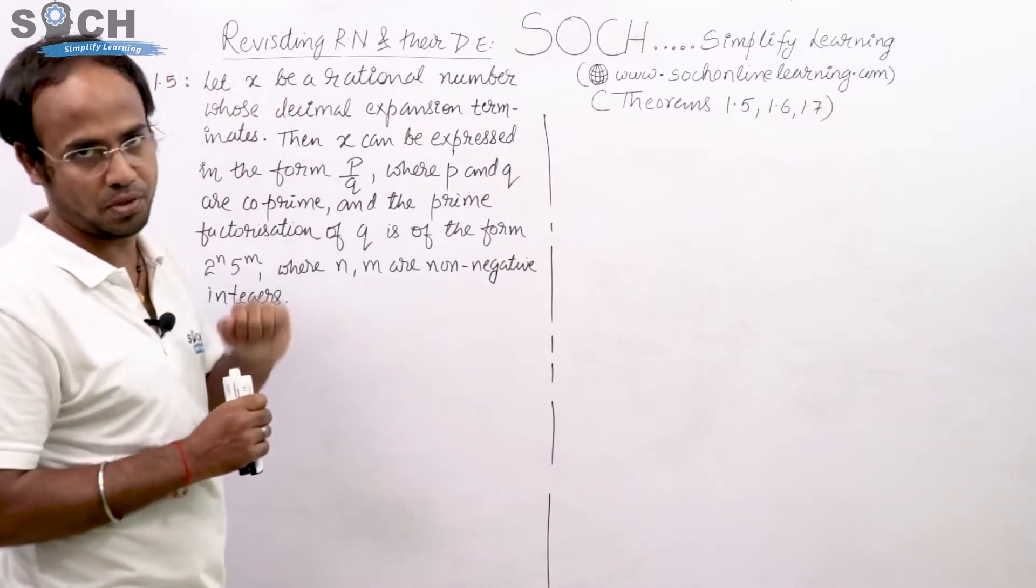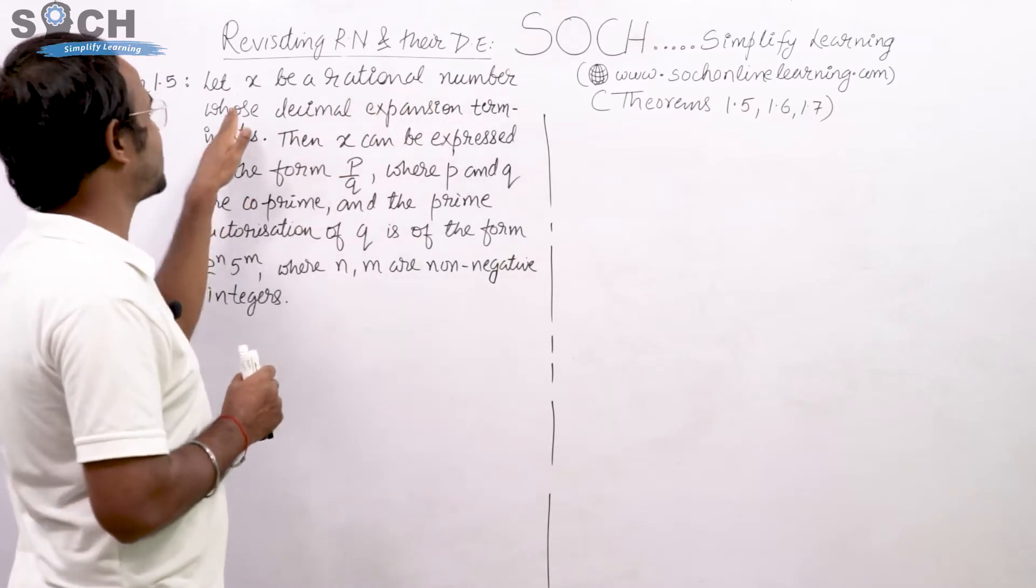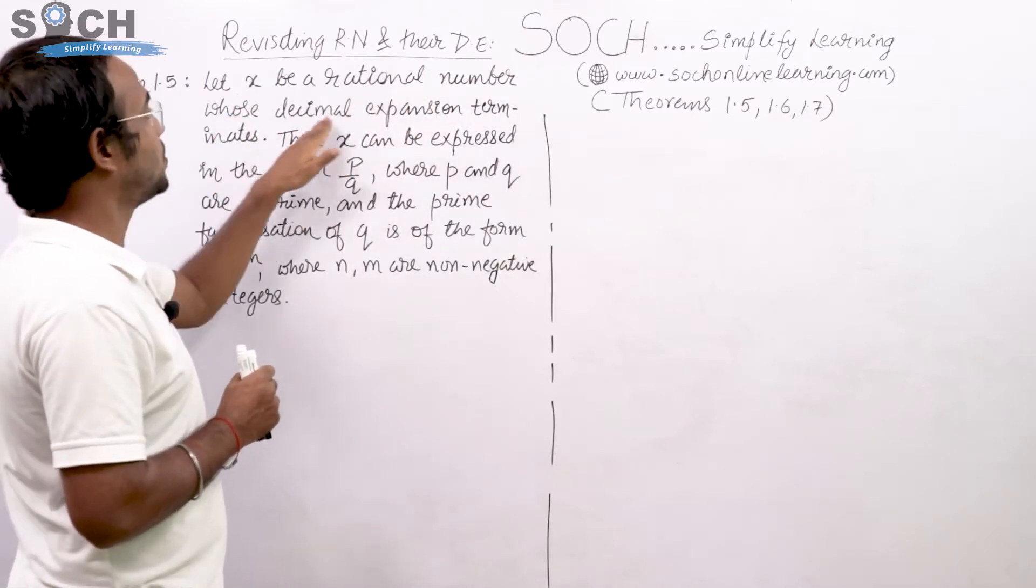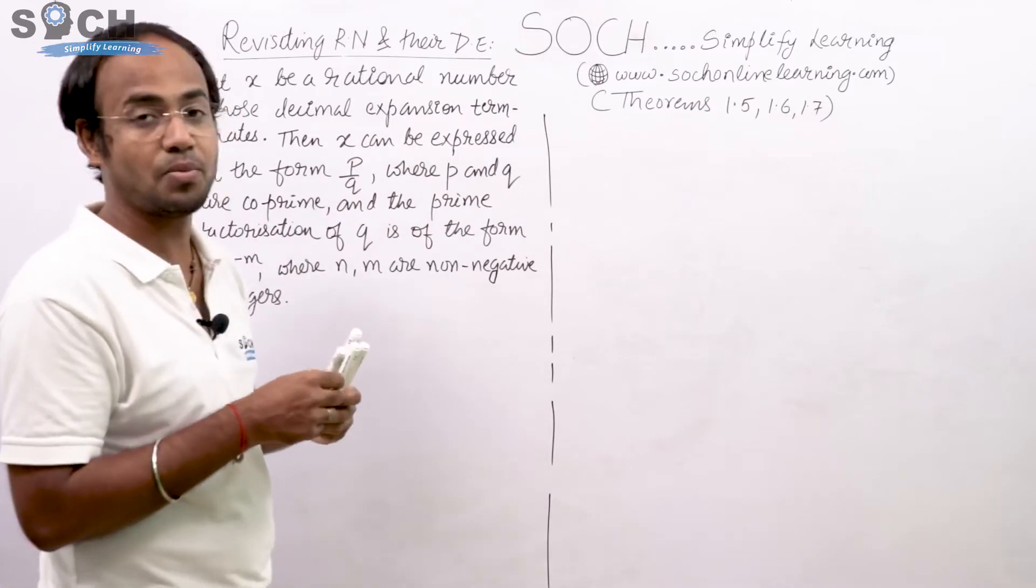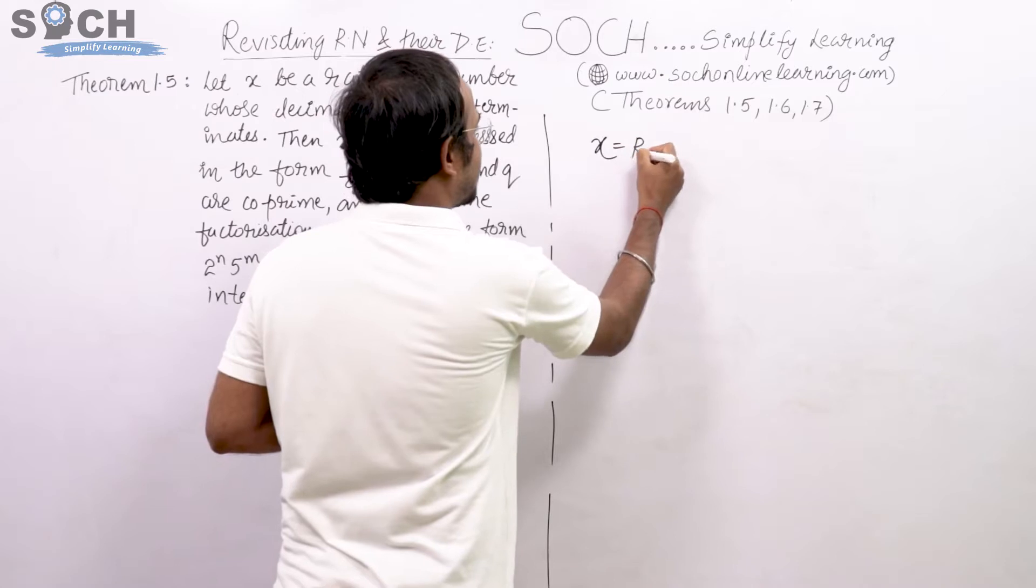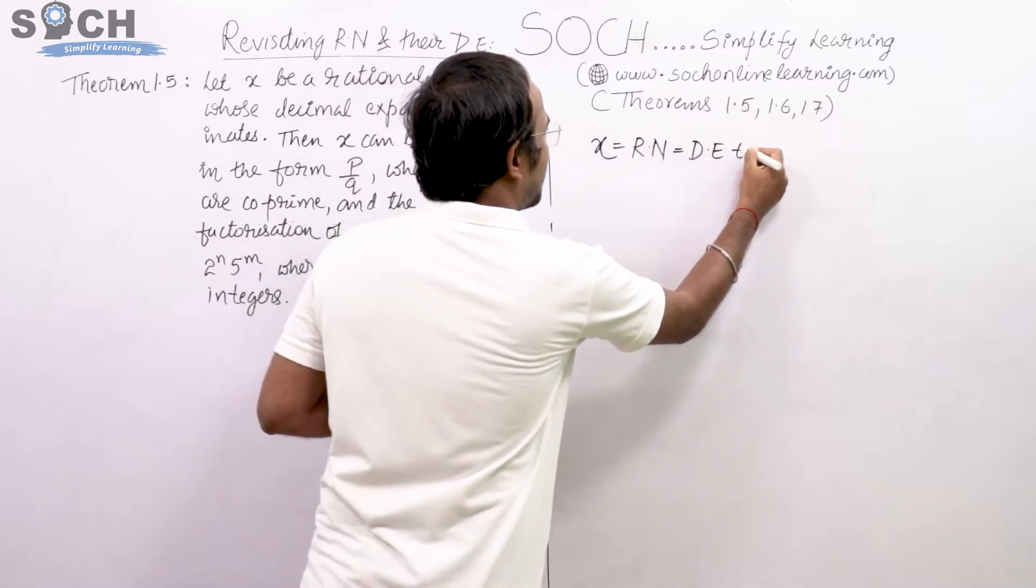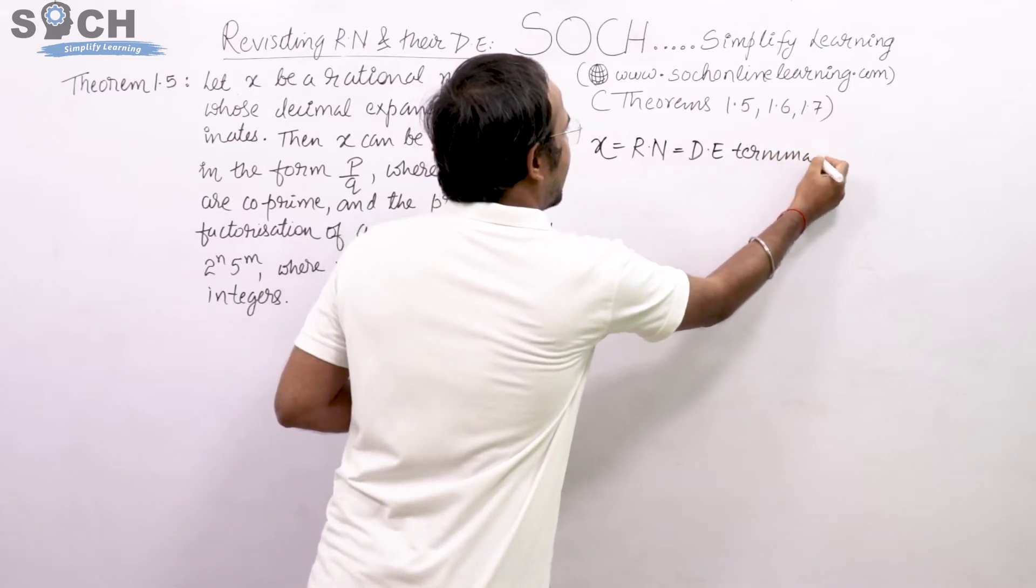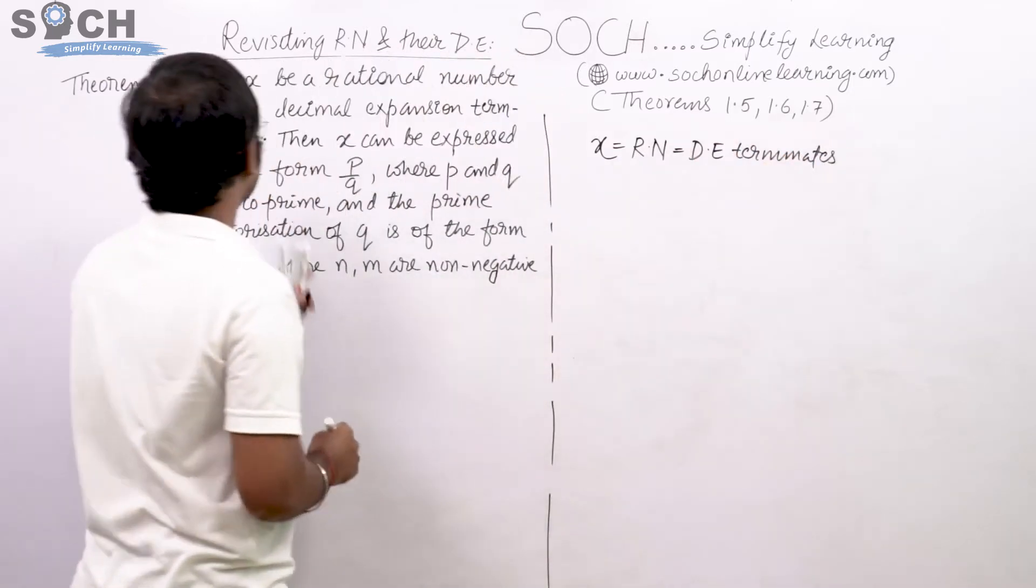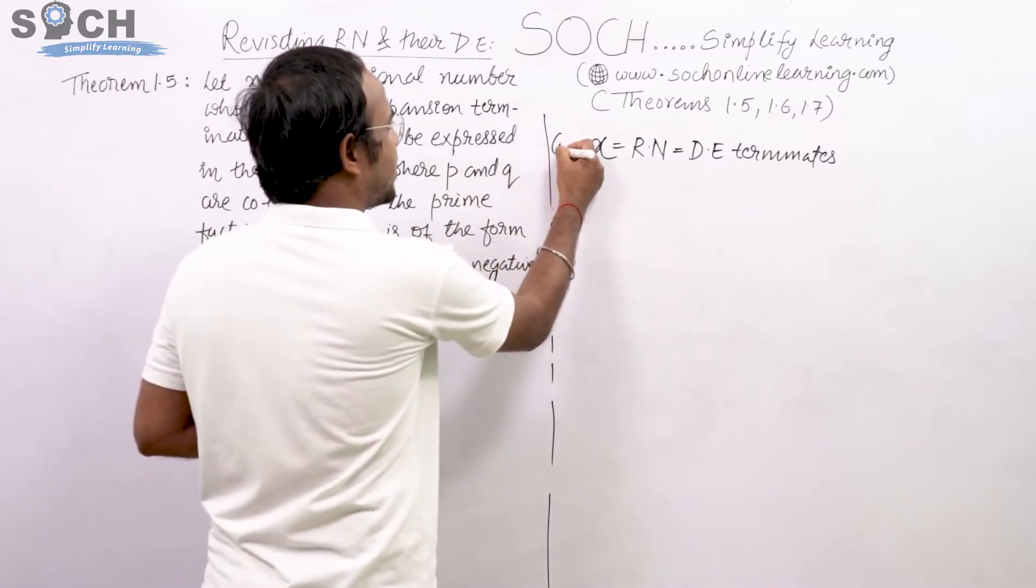This is theorem 1.5. Let me read out the theorem for you. Let X be a rational number whose decimal expansion terminates. X is a rational number whose decimal expansion terminates.